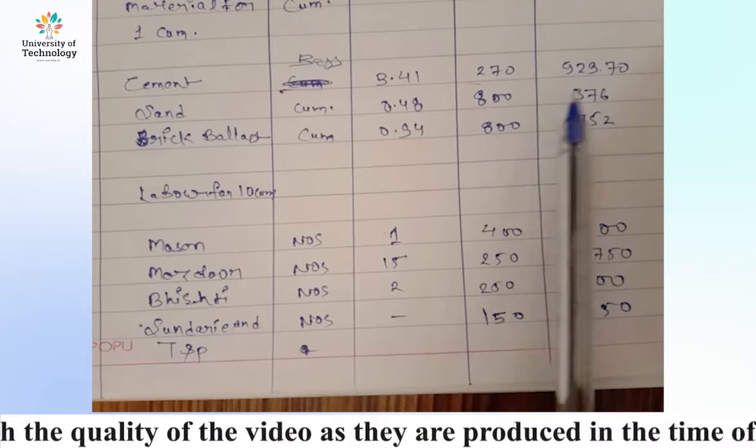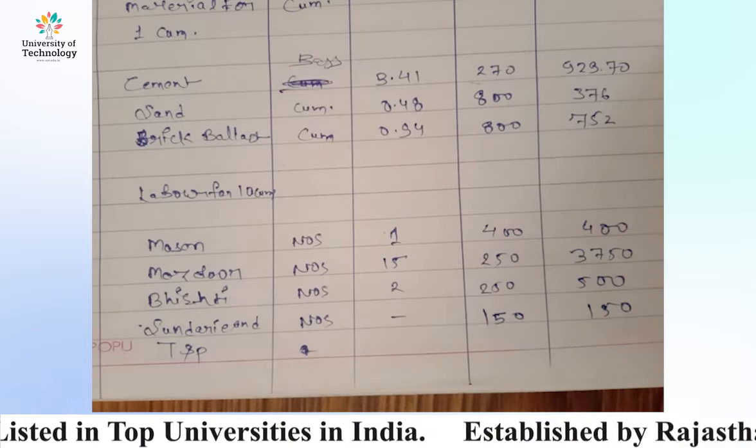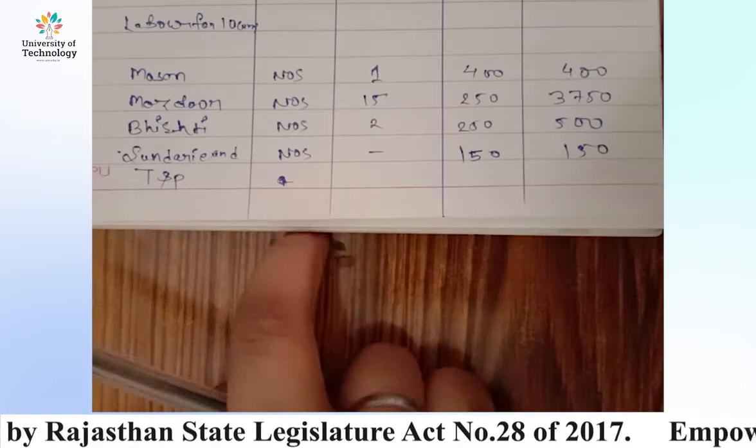I will tell you the rates per cubic meter so you can fill in cement and sand rates. For brick ballast, take 800 as the rate and multiply. So each unit rate is filled in and you can compute the amount for each material item.